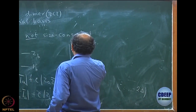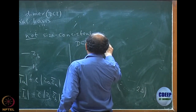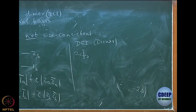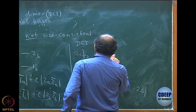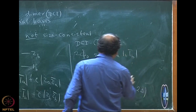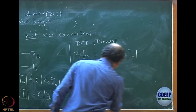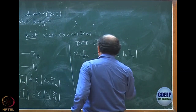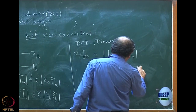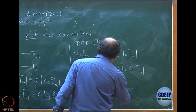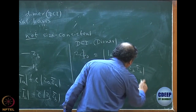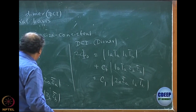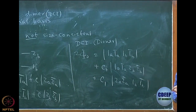I will show that when I write the DCI function for the whole dimer in the non-interacting regime, it is not a product of the monomer functions. The DCI for the dimer — 2phi_0 — is |1A, 1A bar, 1B, 1B bar> plus C' times |2A, 2A bar, 1B, 1B bar> plus C' times |1A, 1A bar, 2B, 2B bar>. I distinguish between this C and the monomer C because they are actually not the same.